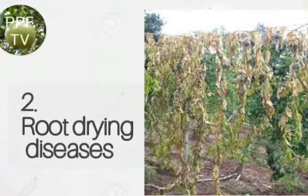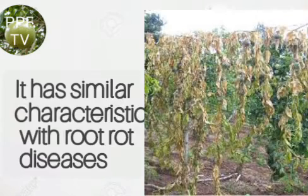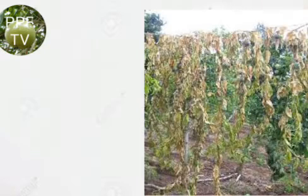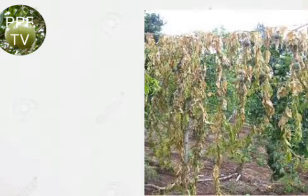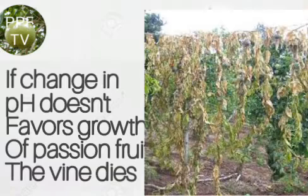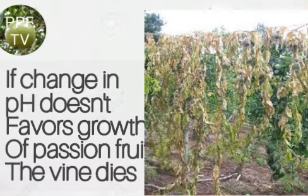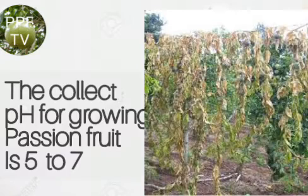Number two, we have root dry disease. Root dry disease is almost similar to root rot disease. The difference is it is caused by changing nutrients or pH in the soil. If the pH in the soil does not favor the growth of Passion Fruit, it can cause drying of the vine. The best pH to grow Passion Fruit is from five to seven.